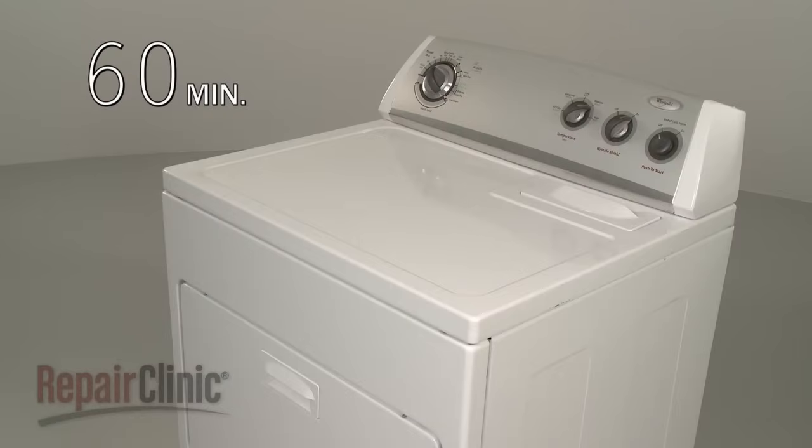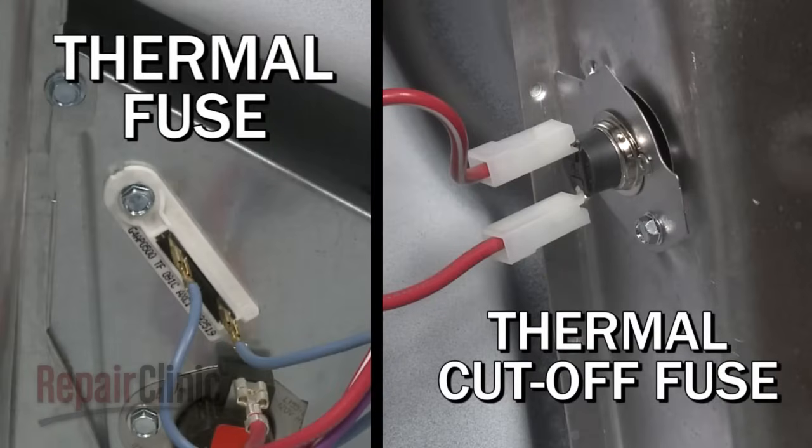However, the dryer will take too long to dry, because the heat is continually being shut off, and the thermostat itself can become damaged. Some models may have a thermal fuse on the blower housing and a thermal cut-off fuse on the heater housing. Either of these fuses can fail due to poor airflow. If this happens, the dryer will not heat, or it may not run at all until the fuse has been replaced.